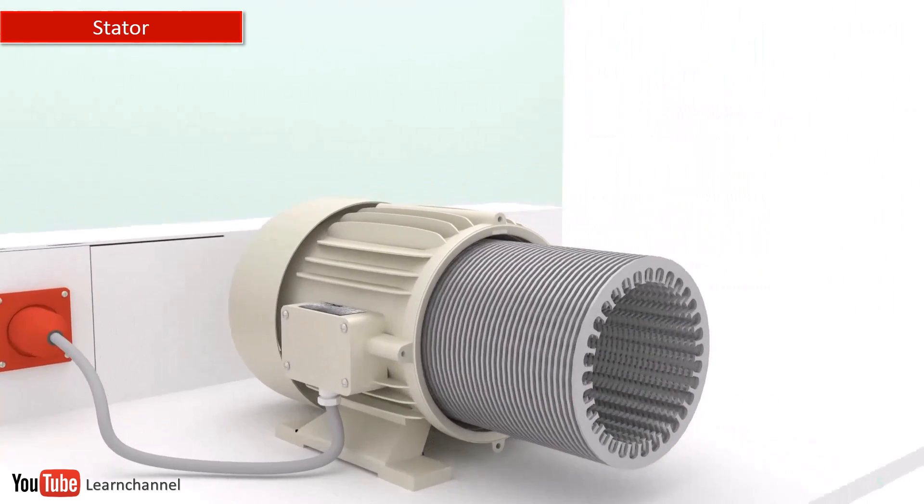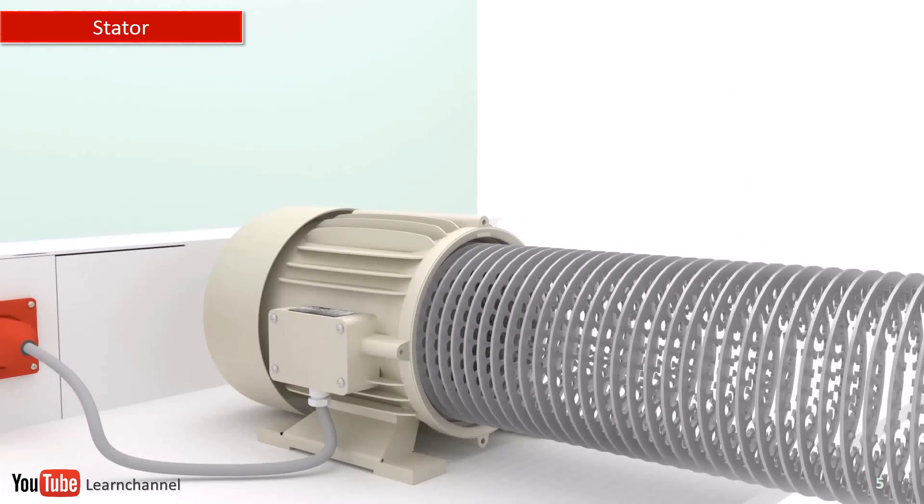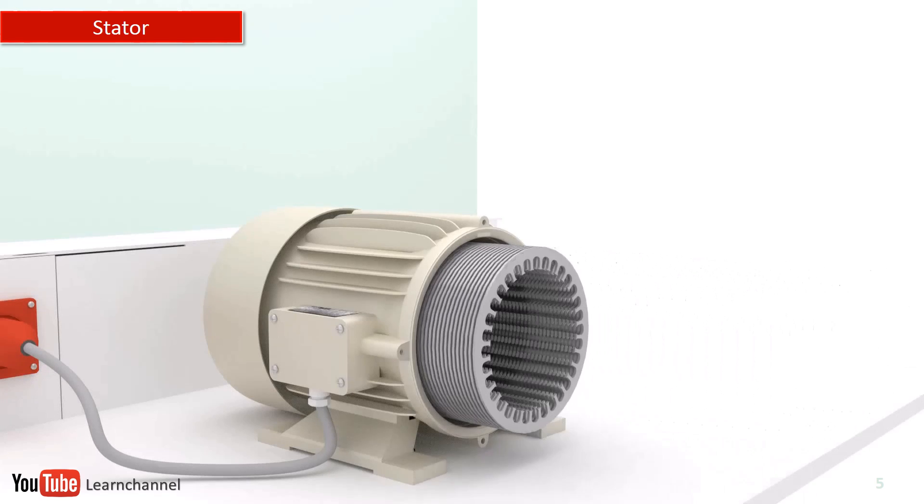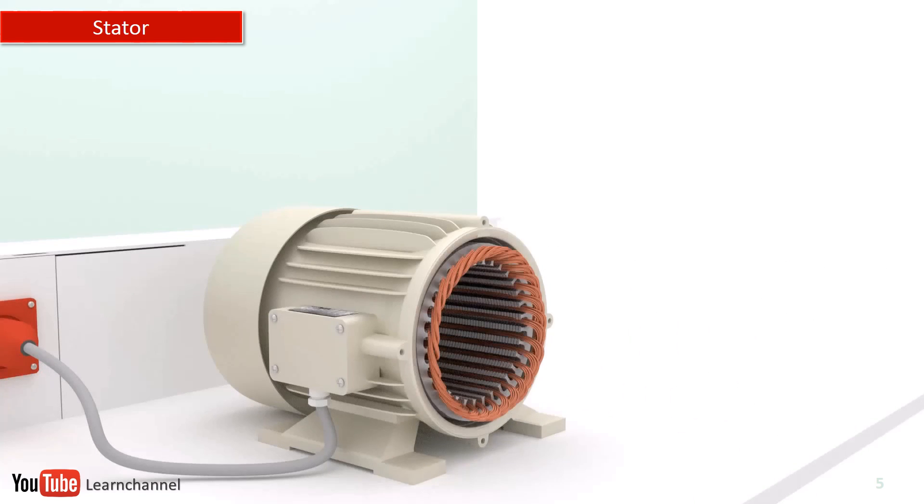The stator consists of a hollow, cylindrical core with a number of evenly spaced slots, which provide the space for the stator winding. To interrupt the path of the electric eddy currents, this core is made up of stacked laminations.